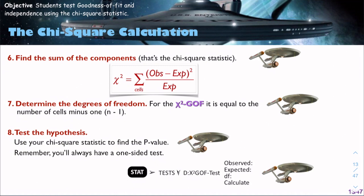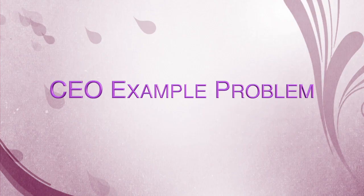You use the chi-squared statistic to find the p-value. Remember, you'll always do a one-sided test for chi-squared. If you go to your distributions menu, you'll see chi-squared CDF. Or, if you go to the test menu, you'll see chi-squared G-O-F, for goodness of fit. What you're going to enter is your observed list, your expected list, and your degrees of freedom. So let's try this out with our CEO data.